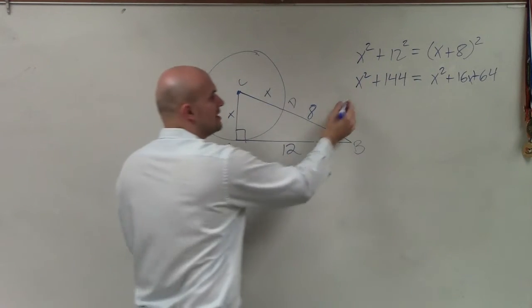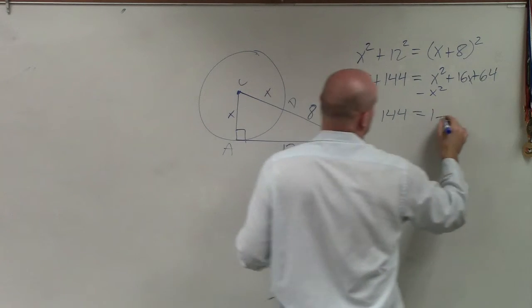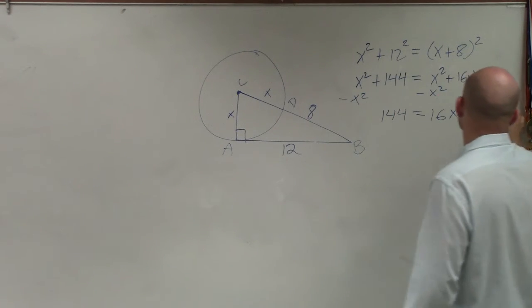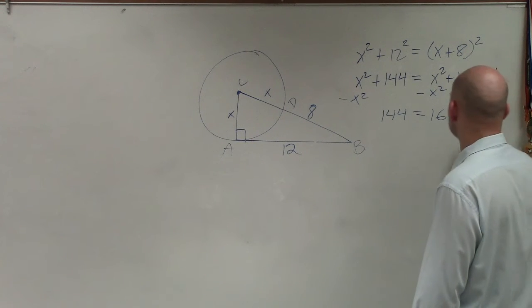As I solve for x here, I subtract x² on both sides. I get 144 = 16x + 64. Now all I have to do is solve for x. So I subtract 64 on both sides.